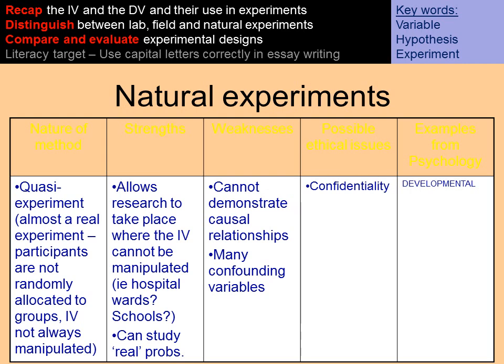Natural experiments are often used in developmental psychology, which looks at child psychology and the study of children. The weaknesses are that they cannot allow us to demonstrate a cause and effect relationship between the IV and the DV because the IV isn't being purposely manipulated by the experimenter. Often a lot of confounding or extraneous variables will interfere with the results, meaning we cannot draw causal conclusions.